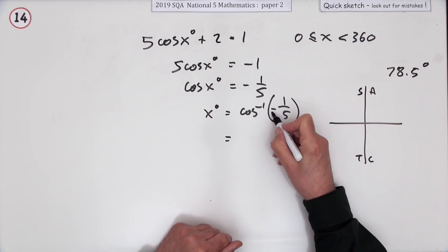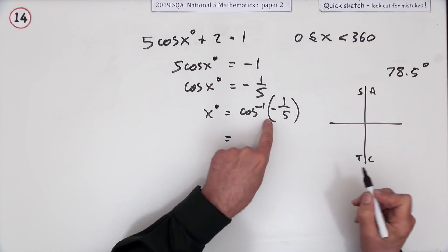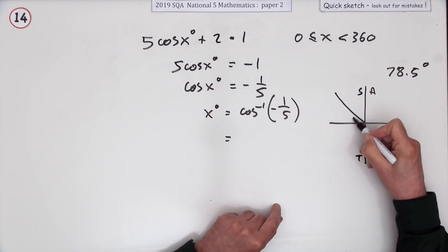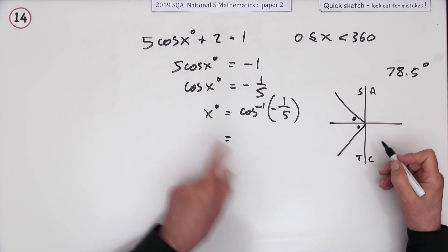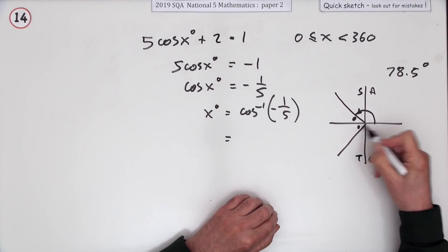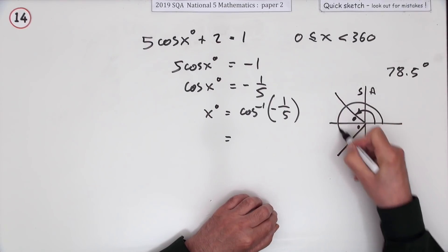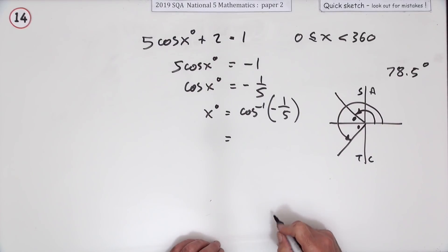Now the CAST diagram takes over and deals with this negative. The cosine is negative here in the second quadrant and here in the third quadrant. So the two angles you want are either this angle here, which is 180 minus it, or this angle all the way around, which is 180 plus it.